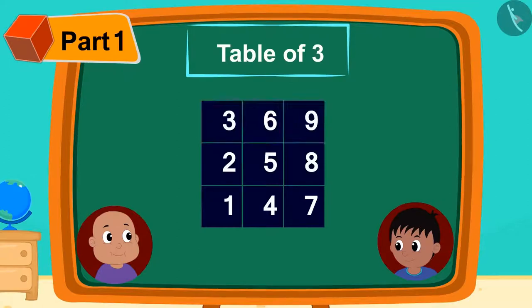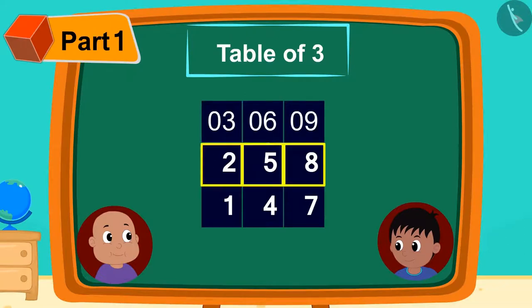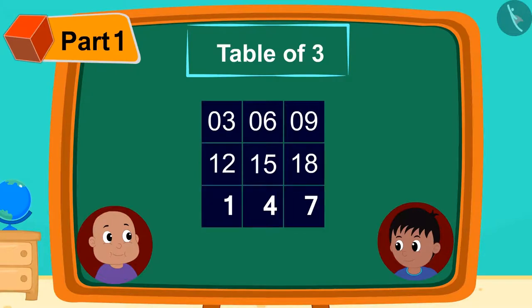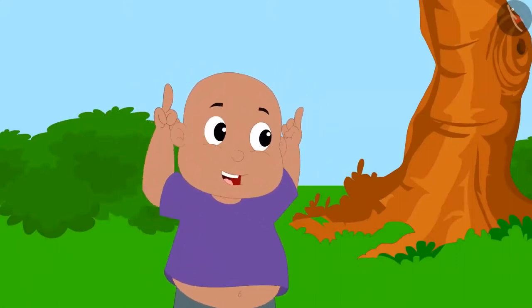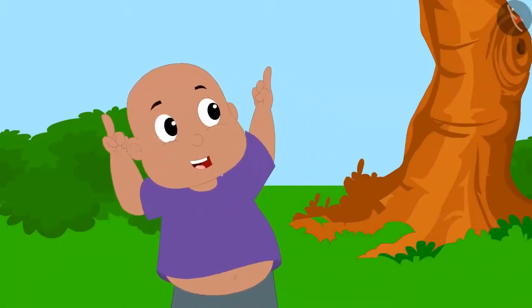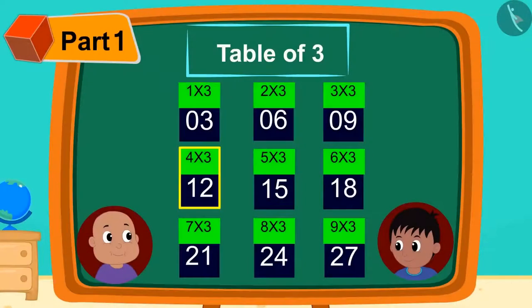Raju wrote 0 in front of the digits in the first line, 1 written next to the second line digit, and 2 written next to the digits of the third line. Bablu started dancing happily. Do you know why? Because he could see the table of 3 here.